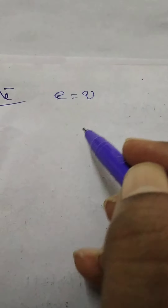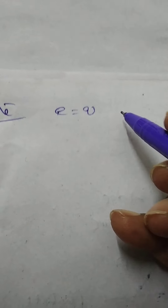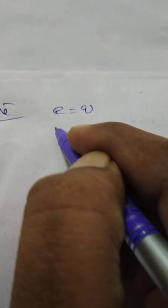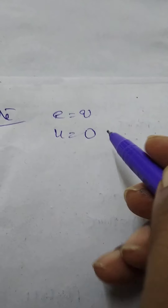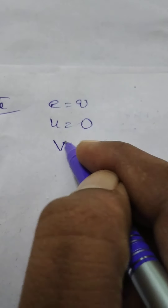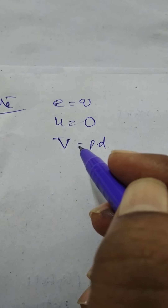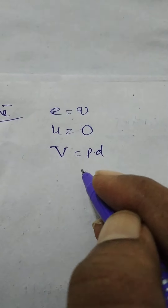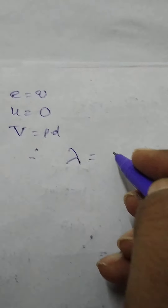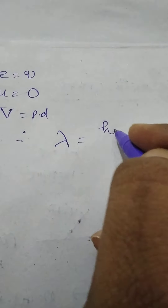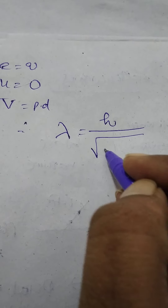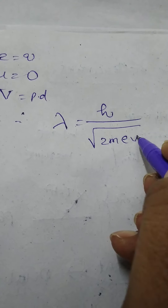Charge on the particle is equal to e, which is equal to q, starting from rest and also accelerated through a potential difference of V volts. Then the de Broglie wavelength lambda is equal to h by root of 2m into eV, or 2m into qV, whatever it may be.